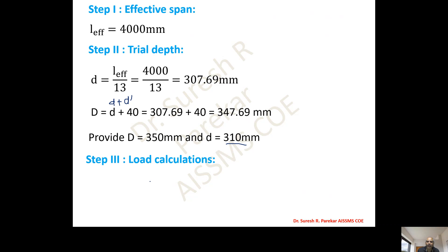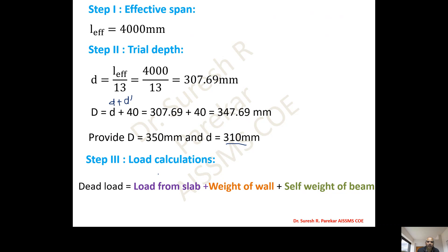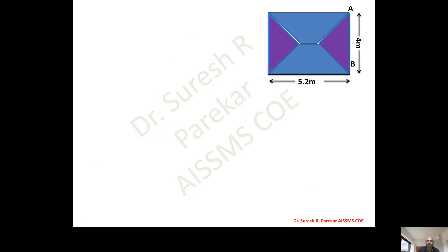For load calculations, there are three loads to consider: load from slab, weight of wall, and self weight of beam. The loads are shared by different beams — the longer span takes trapezoidal load and the shorter span takes triangular load. For span AB, the load transferred from the two-way slab on the shorter span is triangular. The equivalent UDL for a triangle is w·Lx / 3.